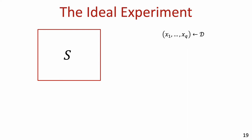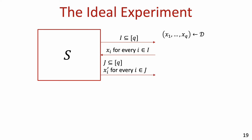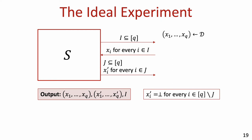The ideal experiment also begins with sampling a vector x1 to xq according to distribution D, but there are no commitments involved. Instead, the simulator S outputs a subset I and simply receives the values xi in the clear for every i in subset I. The simulator also outputs no commitments; instead, it specifies a subset J and immediately outputs values xi' for every i in subset J. For every i not in J, we set xi' to ⊥. The output of the experiment is the vector x1 to xq, the vector of values outputted by the simulator x1' to xq', and the subset I chosen by the simulator. Our non-malleability definition requires that this output is indistinguishable from the output of the real experiment.